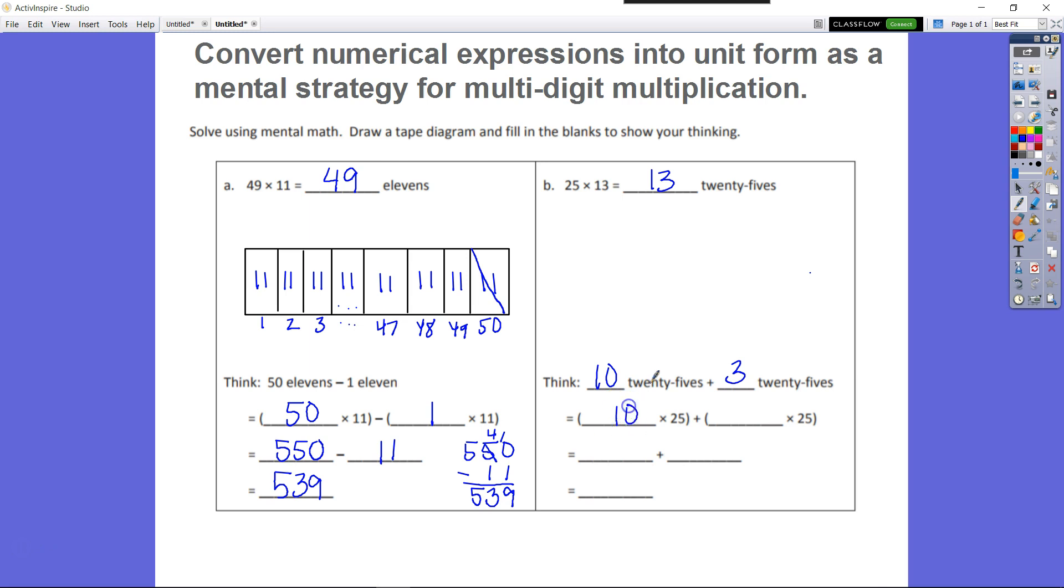That would be 10 times 25 plus 3 times 25. We know 10 times 25 is 250, and 3 times 25 is 75. We would add those two together.